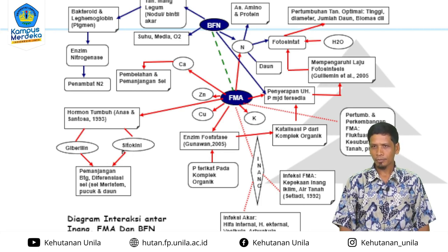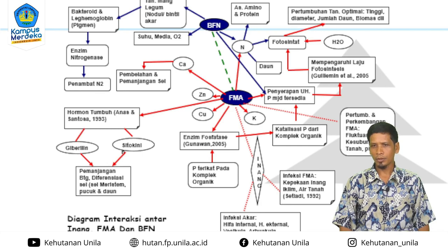Begitu juga dengan kadar Ca. Mikoriza arbuskular juga bisa meningkatkan kalsium (Ca), yang penting bagi pertumbuhan tanaman terhadap aktivitas pembelahan dan pemanjangan sel. Selain unsur hara, FMA juga bisa mempengaruhi peningkatan hormon, menurut Anas dan Santosa 1963, terutama hormon giberelin dan sitokinin, di mana hormon ini penting untuk pemanjangan batang, diferensiasi sel seperti sel meristem, pucuk, dan daun. Tanaman inang juga dapat meningkatkan ketahanannya karena FMA bisa mencegah serangan dari patogen.